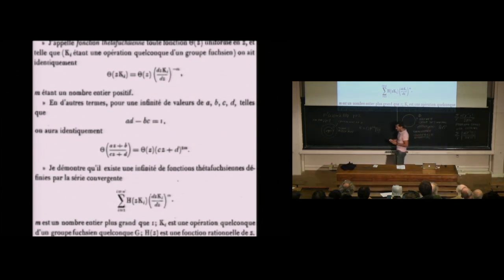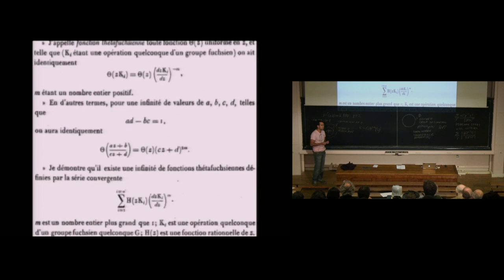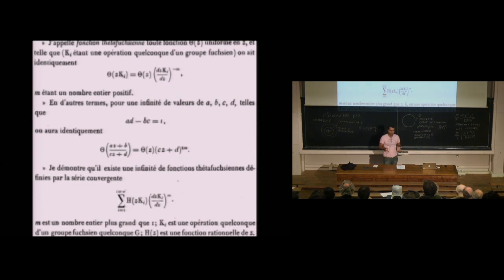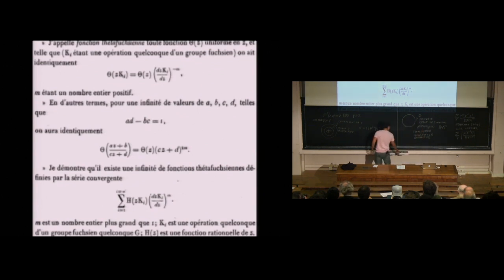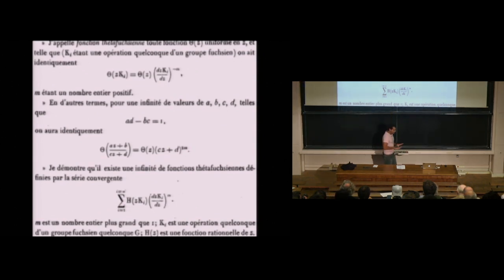About ninety years later, Patterson considered the problem of creating not functions but measures that transform in an appropriate way, associated to a Fuchsian group. To construct these, he used again a Poincaré series — but now he is not interested in holomorphic objects, but only in the absolute Poincaré series.